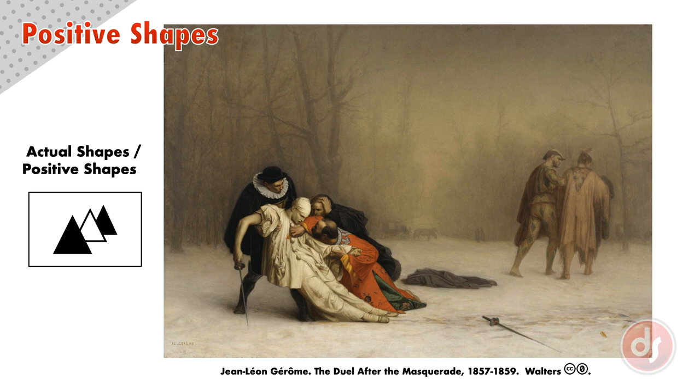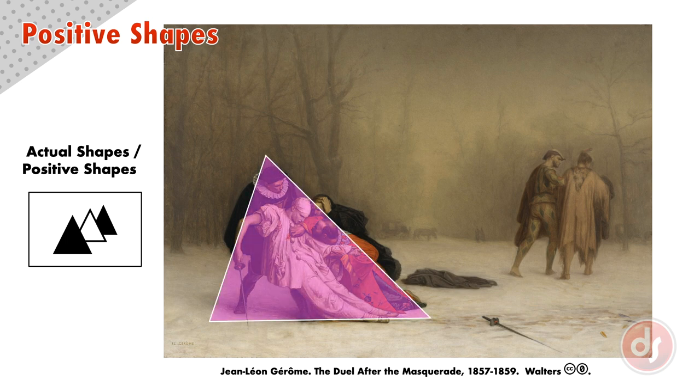In Jerome's Duel After the Masquerade, the figures on the left are part of the positive space. But Jerome intentionally designed the group to create a large triangle, and this would be considered a positive shape.